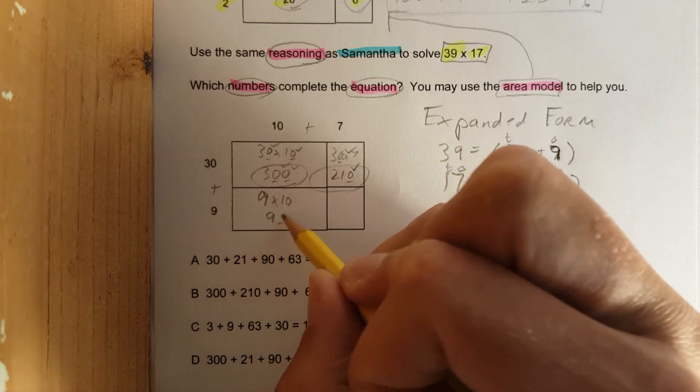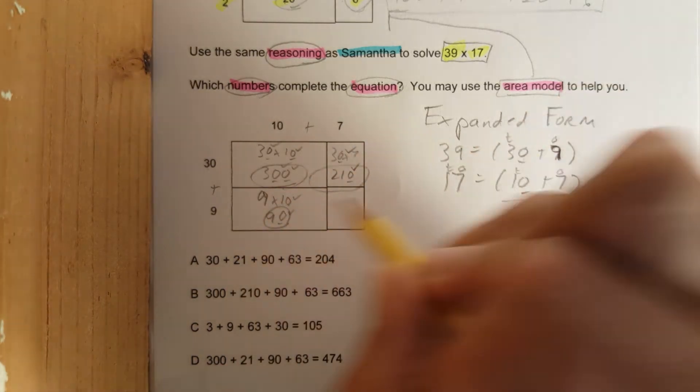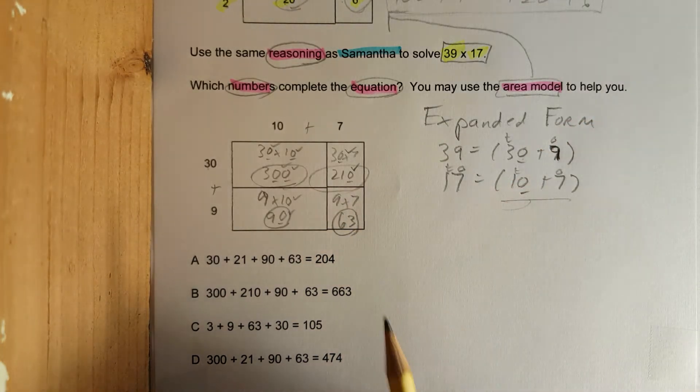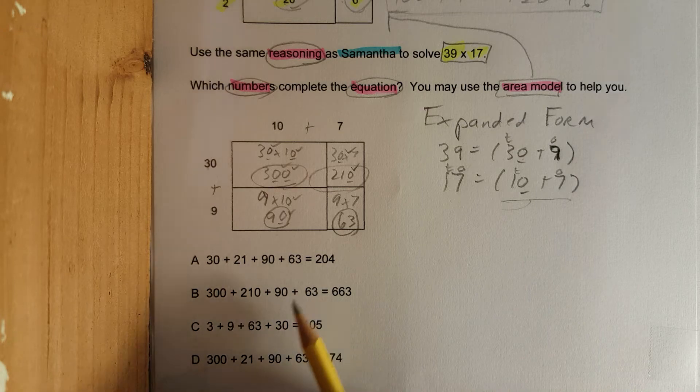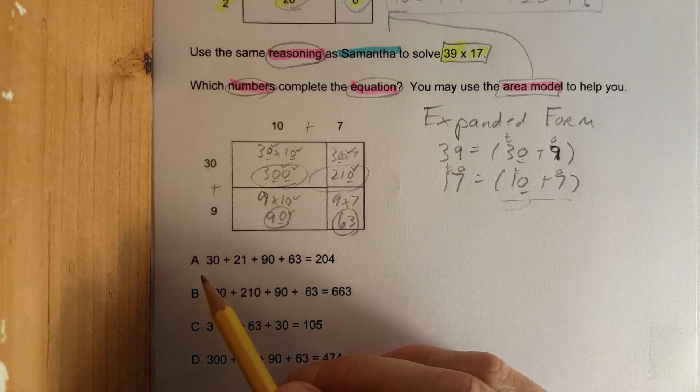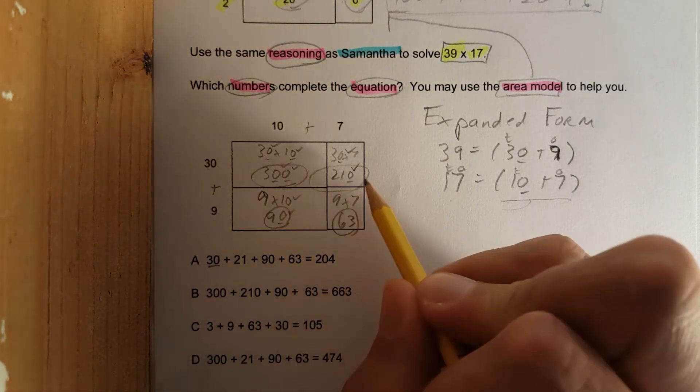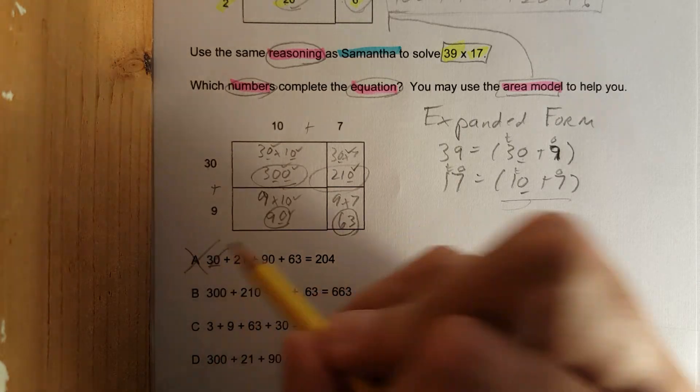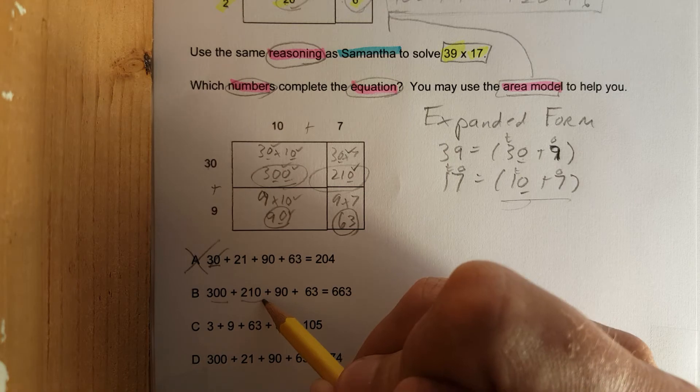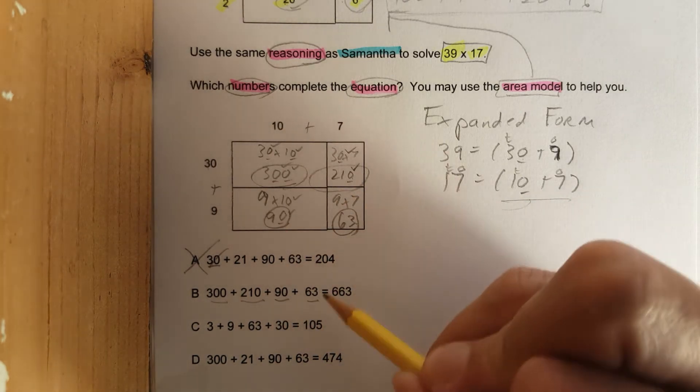Now here's all the possible choices. Since we're about 6 minutes already, we don't want to go for 4 more, so let's speed this up. 30, where is 30 here? Nowhere. So right away A is wrong. 300, 210, 90, 63, all matching.